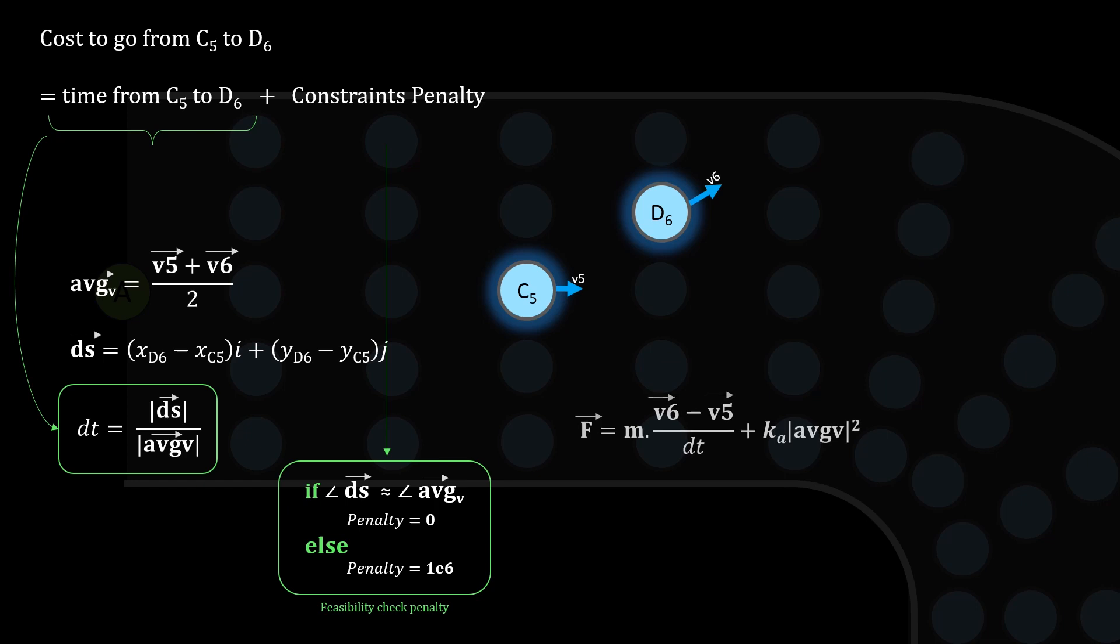For the second penalty we first calculate the force required for this transition. Force required to take the car from C5 to D6 is mass into acceleration plus the aerodynamic force acting on the car. There is a limit on this force due to the limited friction offered by the track and the limited engine and brake horsepower. To simplify things we can assume the limit of F max. If the required force is higher than this limit of F max, we charge a high cost penalty. This completes our cost calculation.